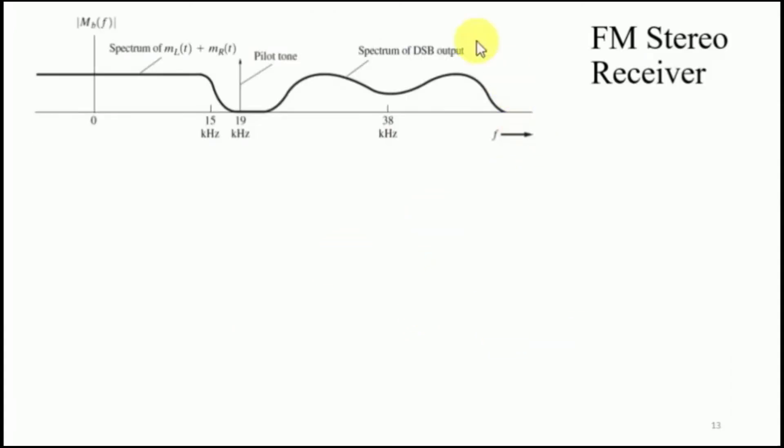On the receiver side, again we have this spectrum. We receive the signal S of T at the FM receiver and the output of FM receiver would correspond to the original spectrum that I have shown here previously.